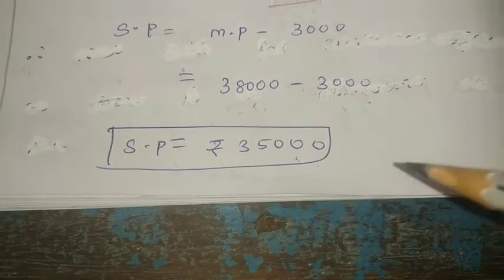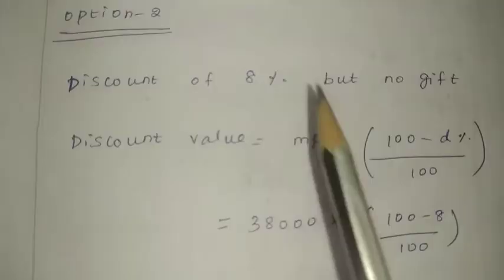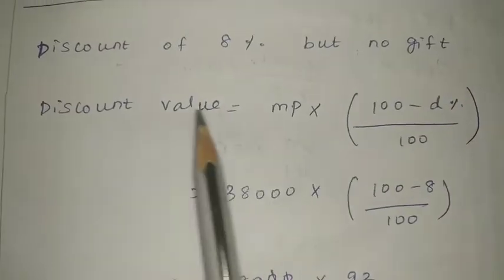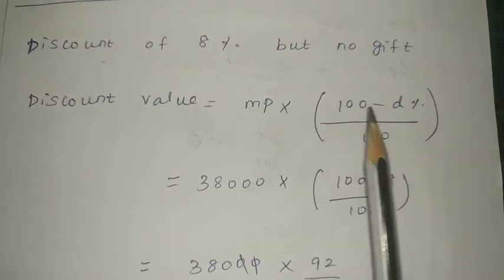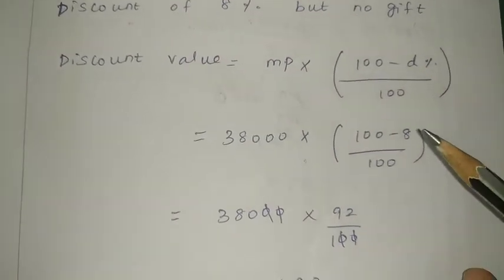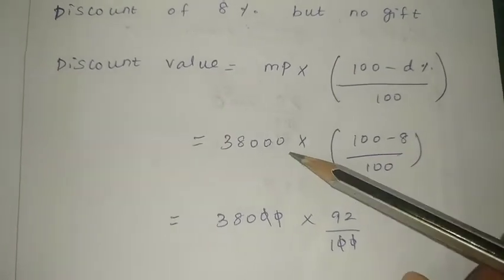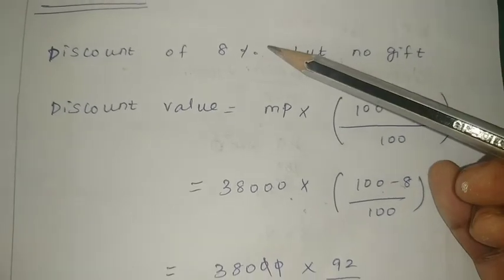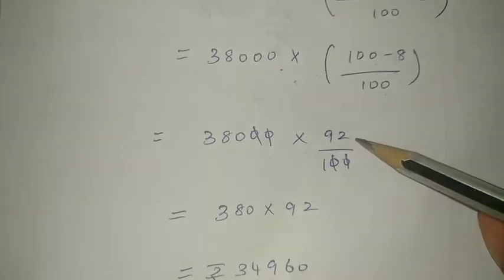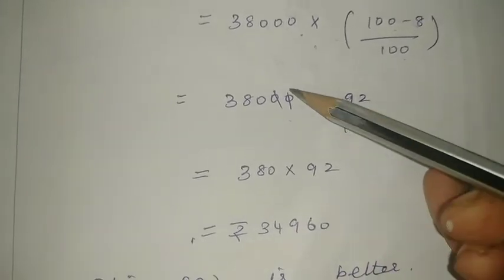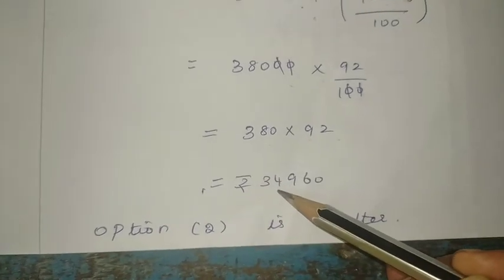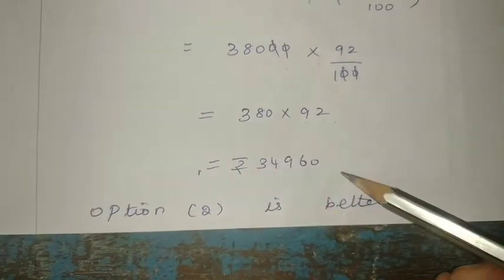Option 2: a discount of 8% but no gift. The selling price formula is: marked price multiplied by (100 minus discount percentage) divided by 100. Marked price is Rs. 38,000, discount percentage is 8%. So Rs. 38,000 multiplied by 92 divided by 100, which gives Rs. 380 multiplied by 92, equals Rs. 34,960. So the selling price under Option 2 is Rs. 34,960.